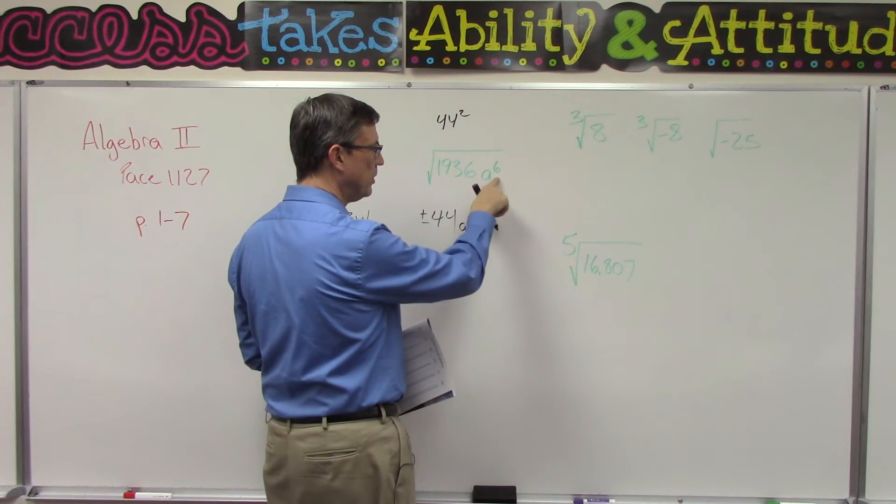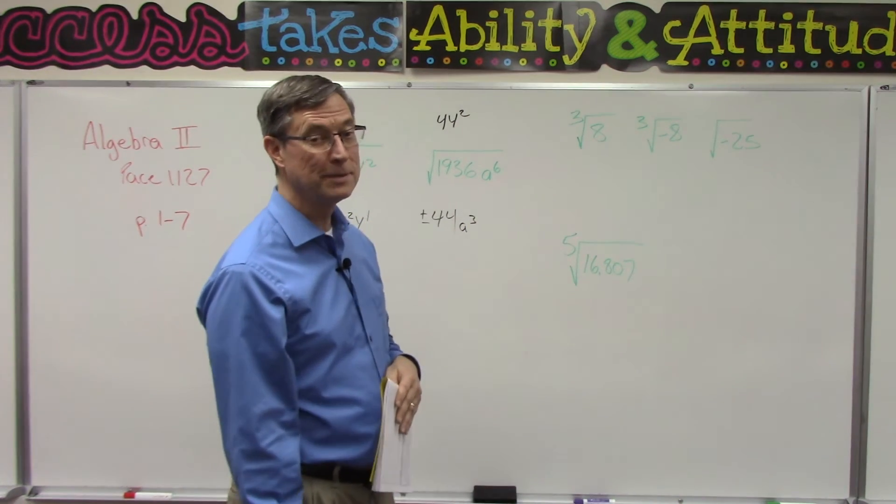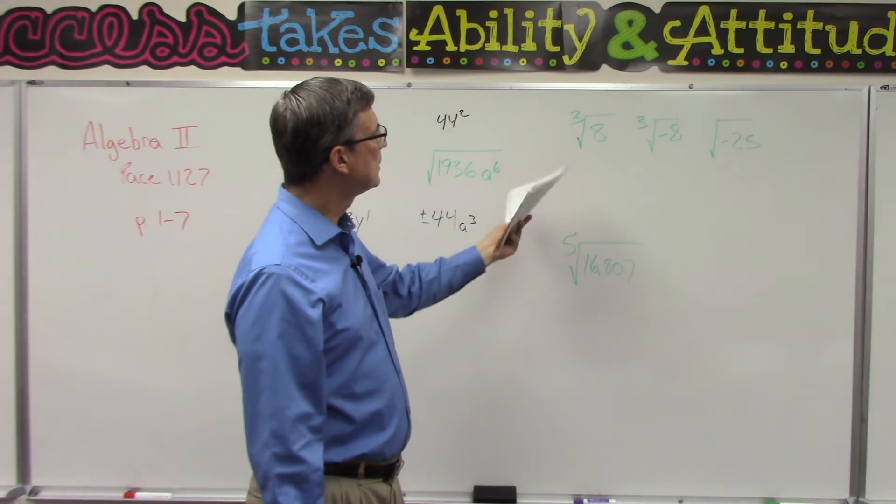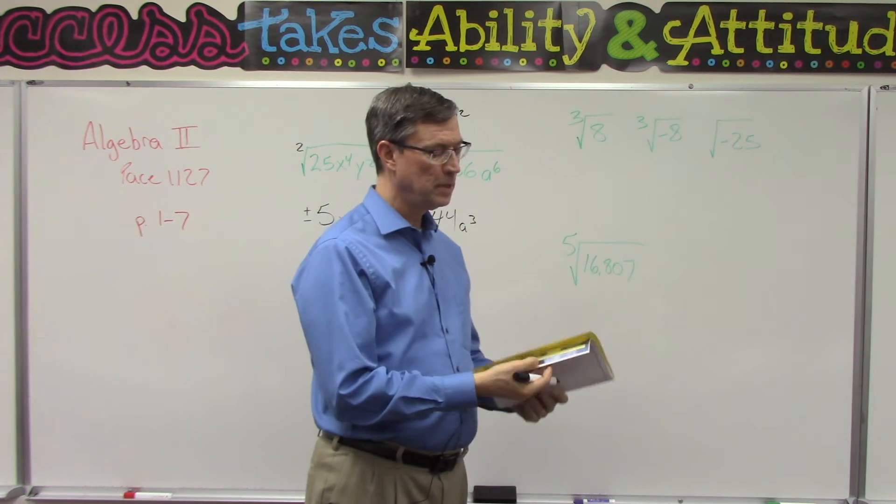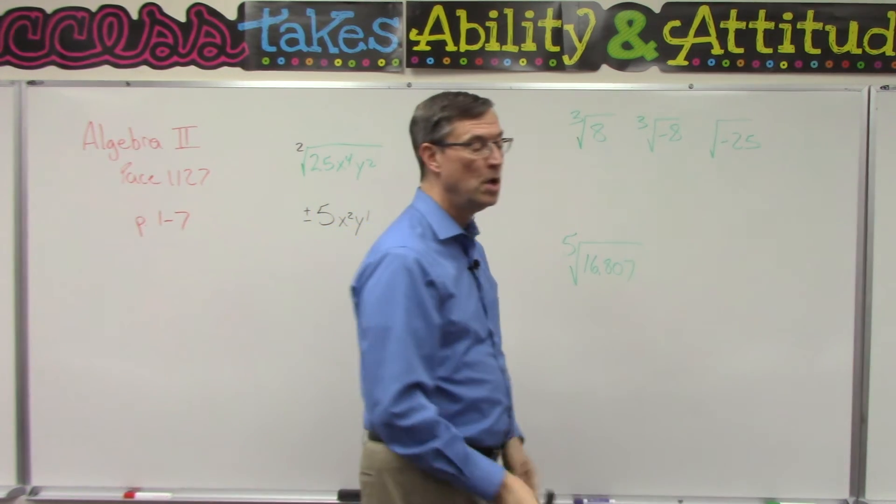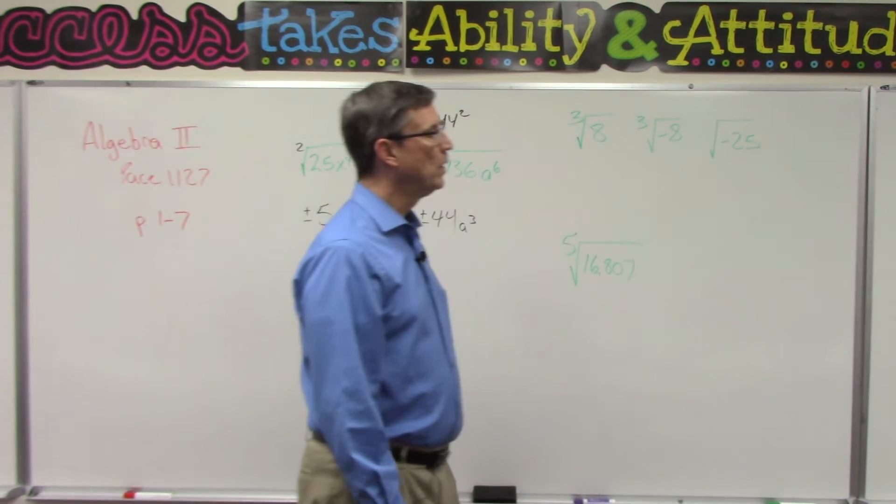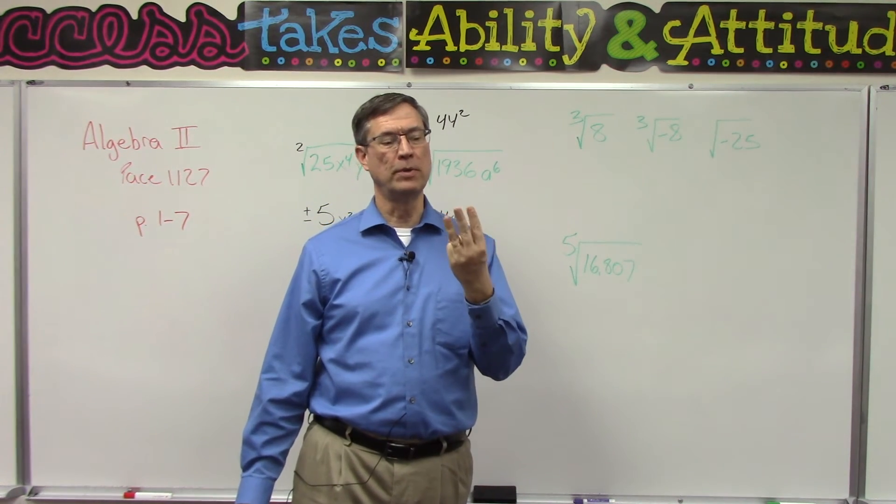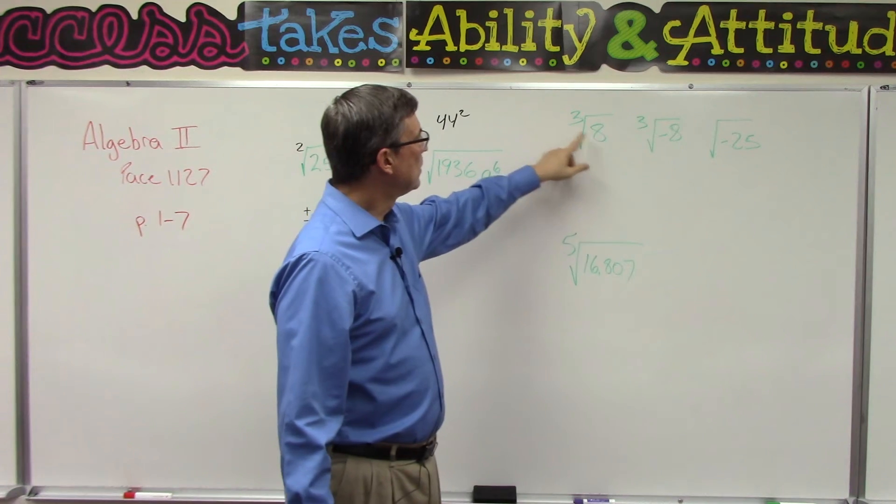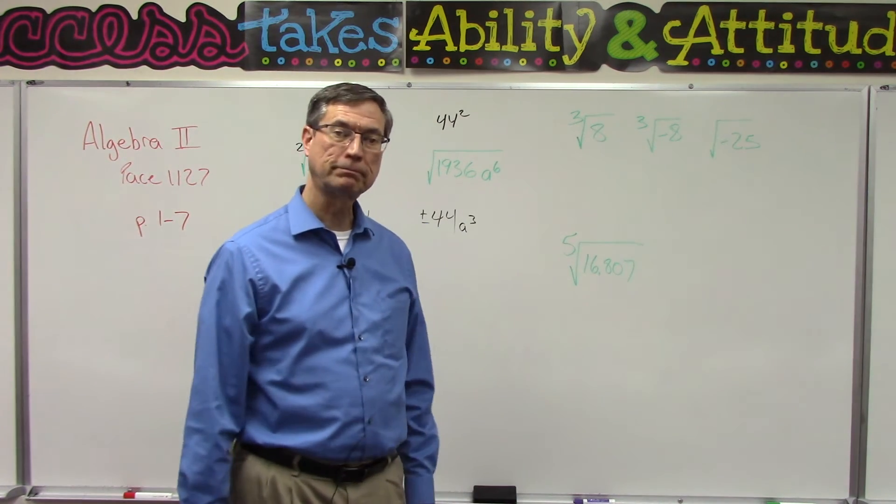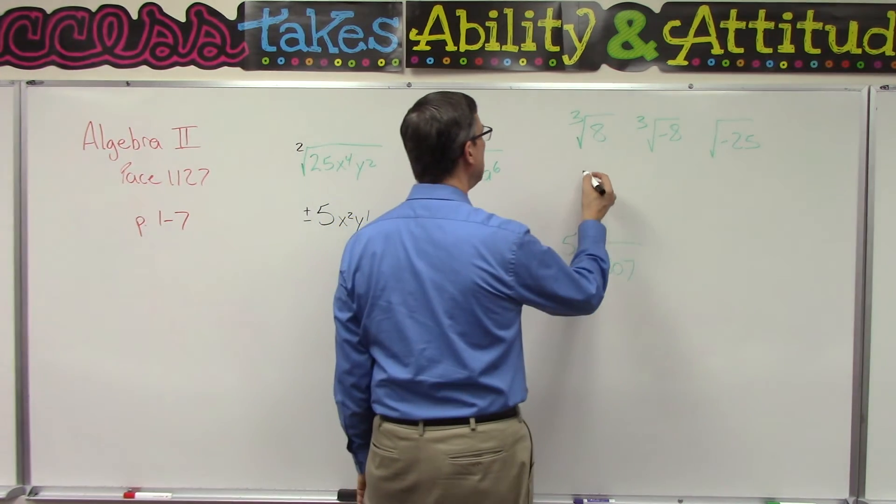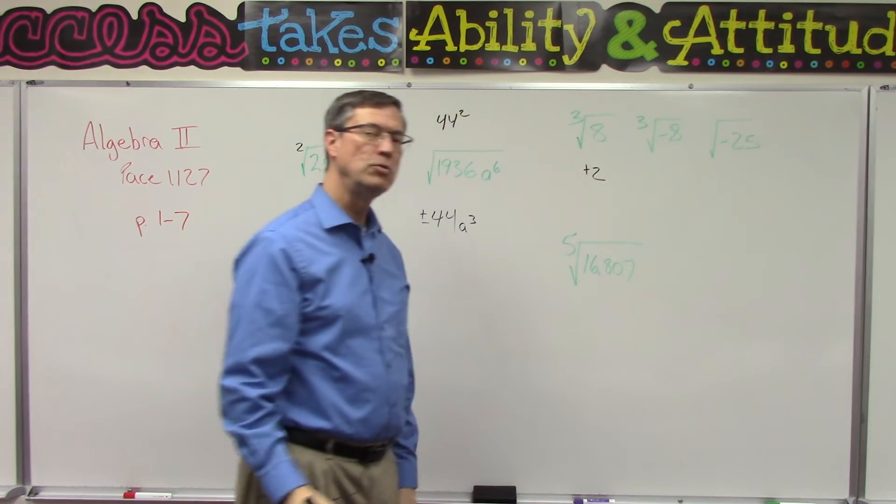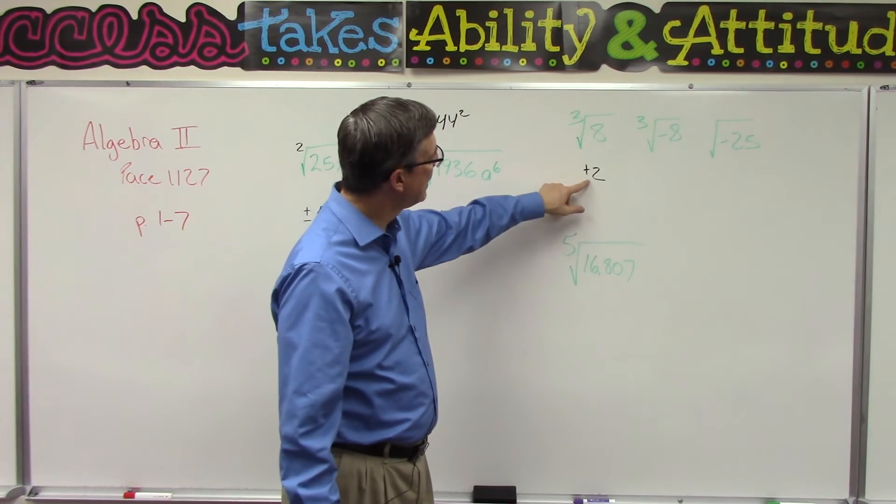Let's talk about what happens if the exponent is not just two. What if it is three? That means what number times itself times itself times itself, so three times, would equal positive 8? And in this case, there is only one answer, and that's positive 2. I could not do negative 2 here, so I'm not going to do plus or minus.